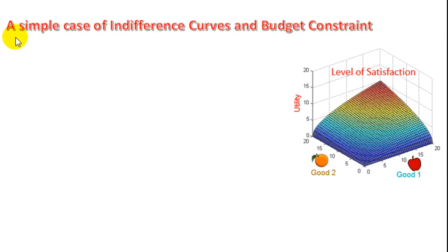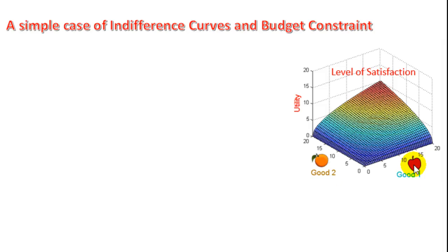In this video we are going to see a simple case of indifference curves and budget constraint. Let's assume that I can eat two goods: good one and good two — let's say apple and orange. This function measures the level of satisfaction that in economics is usually called the utility function. If I eat zero and zero I get zero satisfaction.